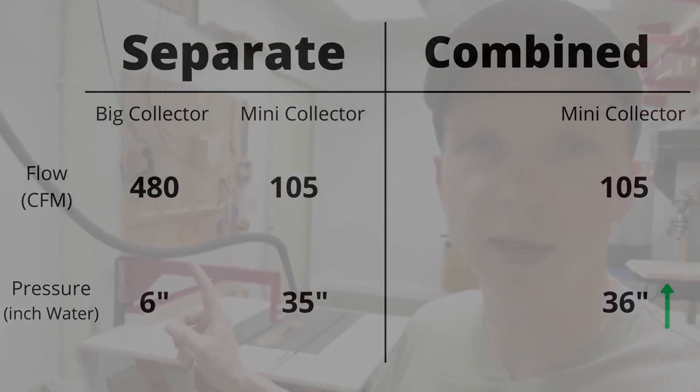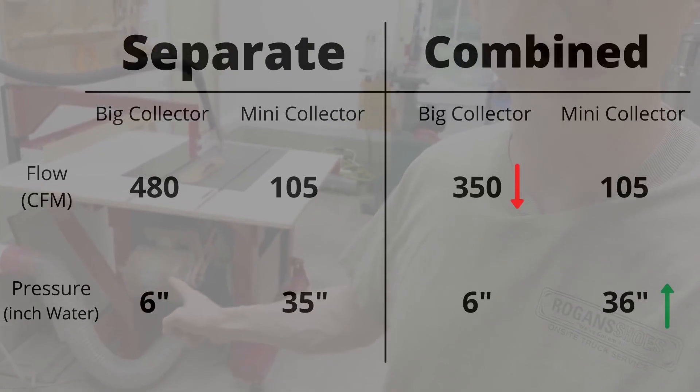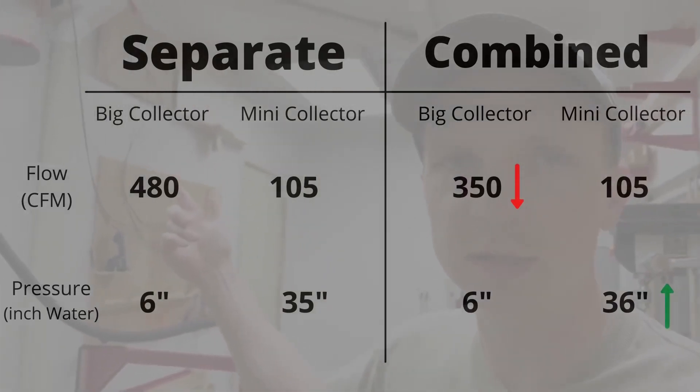What was interesting is that the airflow to the table saw underneath actually went down a little when the mini dust collector was hooked up. And if you think about it, that makes a lot of sense.